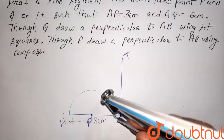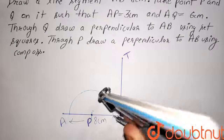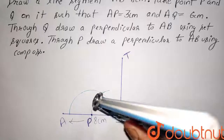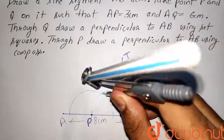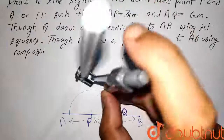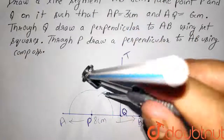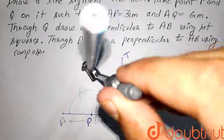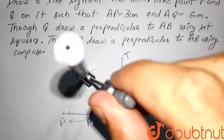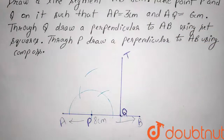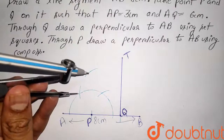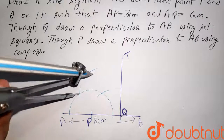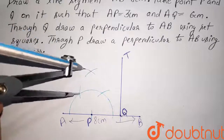Now, taking center at this point, we will cut an arc here. Now, taking center at this point and the measurement of the compass remaining unchanged, we will cut an arc here and an arc here. Now, taking center at this point and the measurement of the compass remaining unchanged, we will cut an arc here.